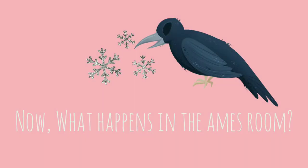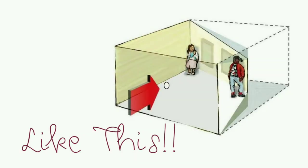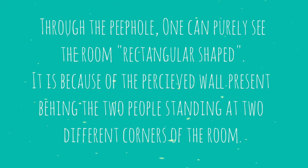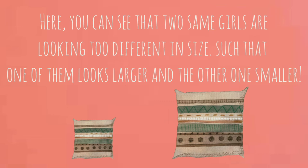After we have constructed an Ames Room, we have to make a hole in the middle of the front wall of the room, which is straight. Through the peephole, one can see the room as purely rectangular shaped. It is because of the perceived wall present behind the two people standing at two different corners of the room. You can see that two identical girls look very different in size, such that one looks larger and the other smaller — likewise the pillows.